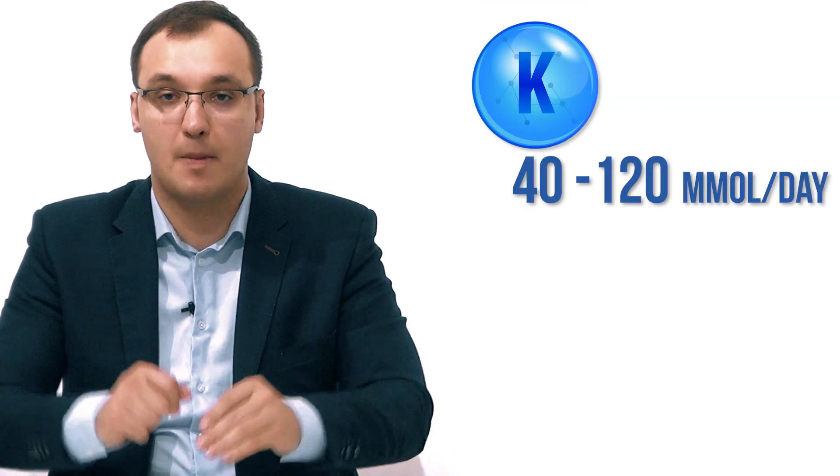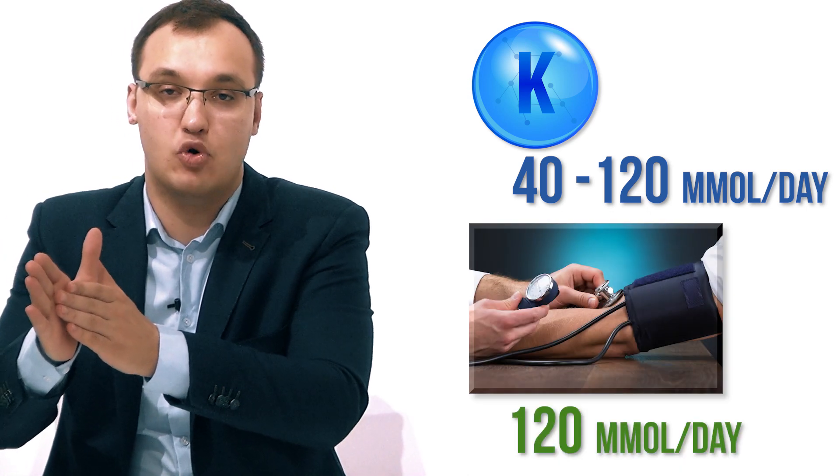To conclude, the normal level is 40 to 120 millimole per day. Please go for 120. How? Eat fruits and vegetables. If you do that, your blood pressure will drop, of course not to normal level necessarily, but it will drop.